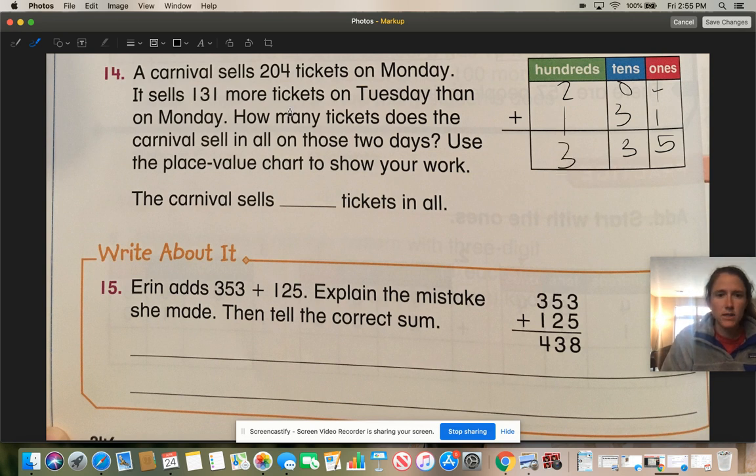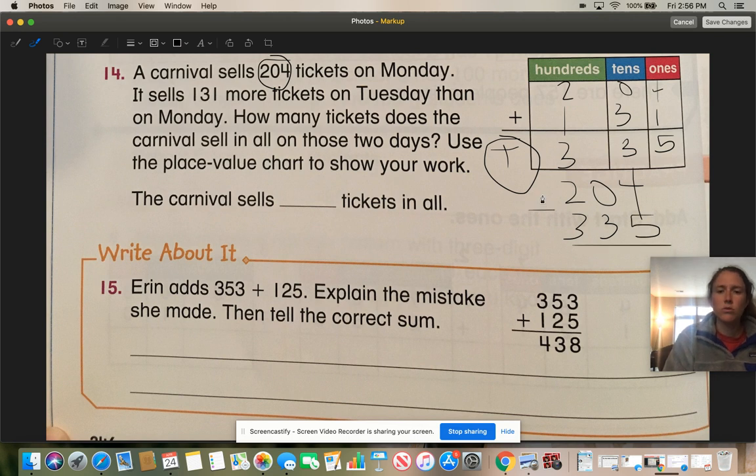Now it says, how many tickets does the carnival sell in all on those two days? Well, this is Tuesday, guys. This is how many he sold on Tuesday. This is how many he sold on Monday, 204. So we have to add 204 plus Tuesday, which is 335. They wanted to trick you into thinking that the answer was 335. That's not correct. 335 is how many they sold on Tuesday. They're asking you how many were sold on both days. So 4 plus 5 is 9. 0 plus 3 is 3. And 2 plus 3 is 5. So the answer is 539.